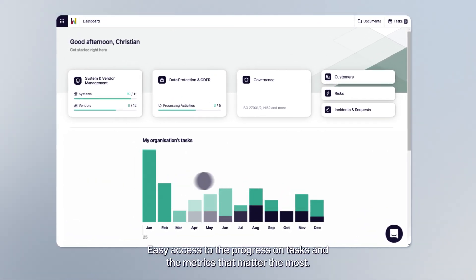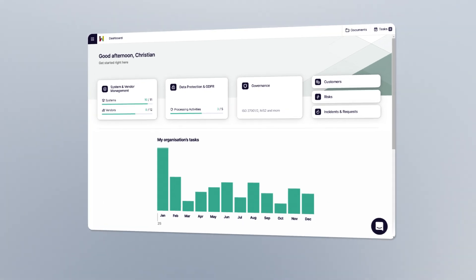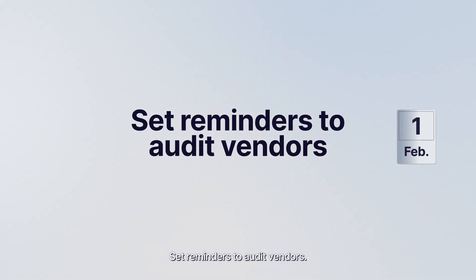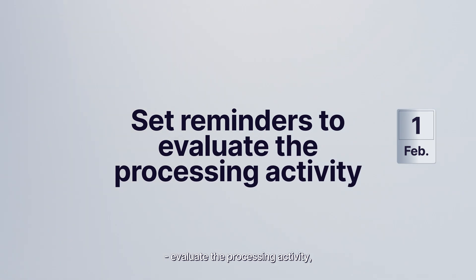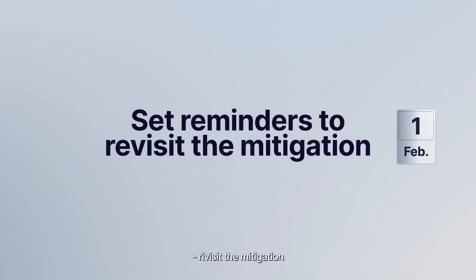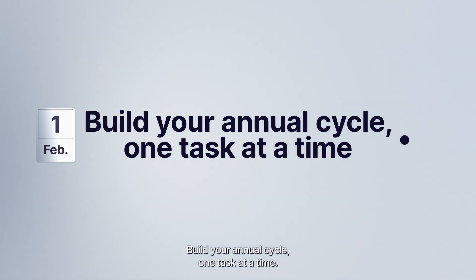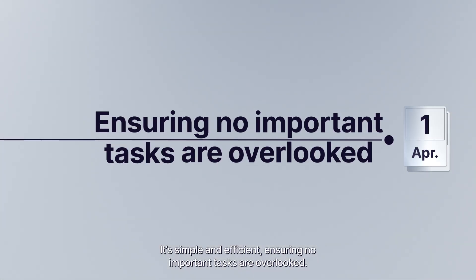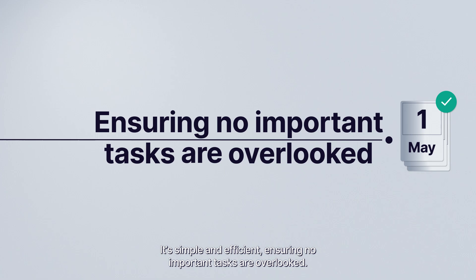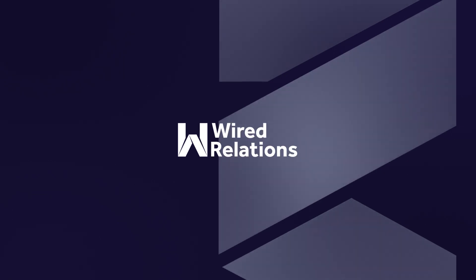Easy access to the progress on tasks and the metrics that matter the most. Set reminders to audit vendors, update the risk assessment, evaluate the processing activity, revisit the mitigation, and much more. Build your annual cycle one task at a time — it's simple and efficient, ensuring no important tasks are overlooked. Data protection, information security: one GRC solution with Wired Relations.